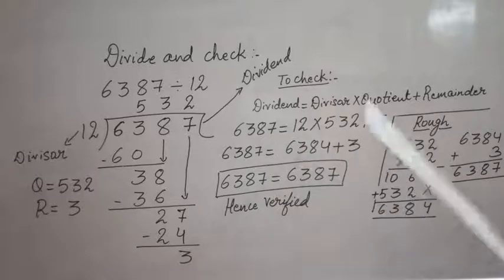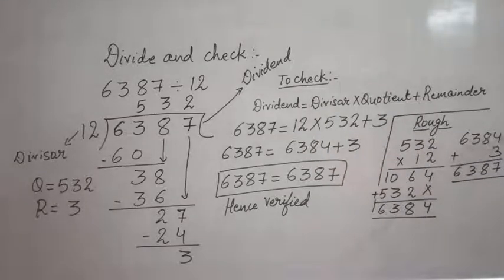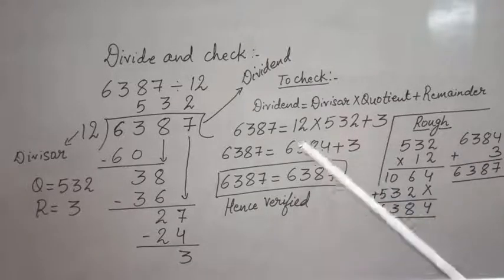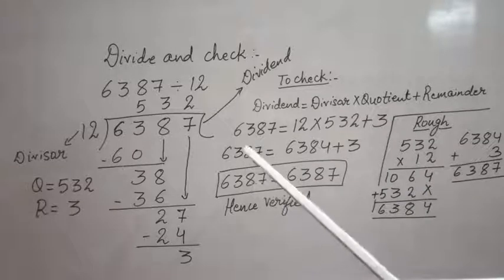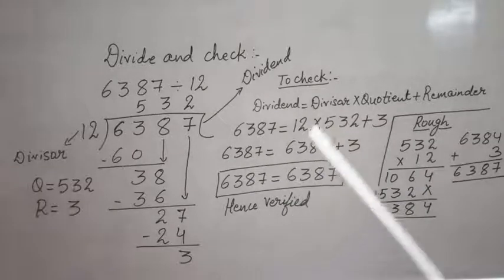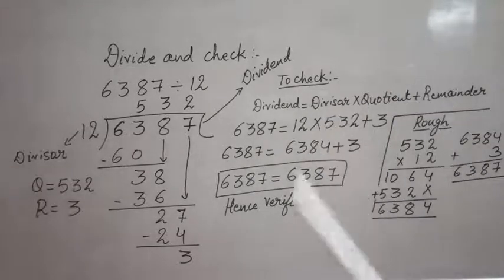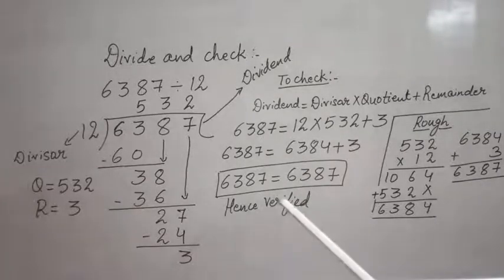Now I will be adding these two numbers: 6384 plus 3. After adding I got 6387, which is equal to my dividend. So finally my answer is correct. In the last I will be writing 'hence verified.' I hope you understood. Thank you.